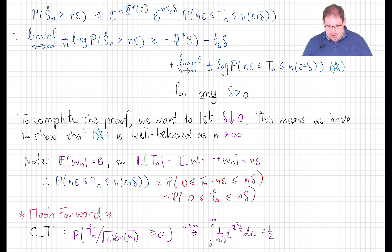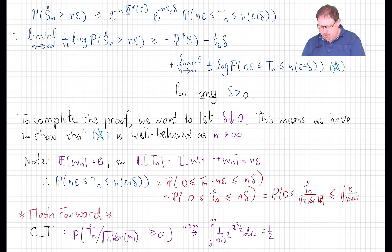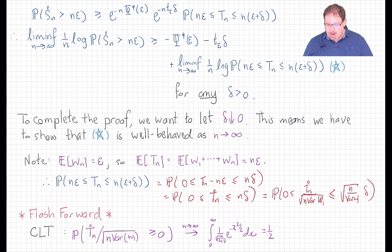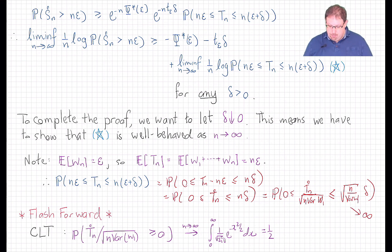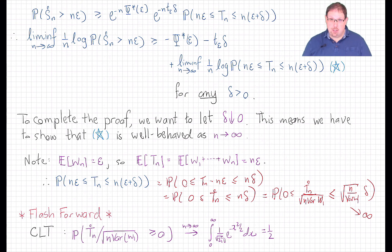The probability we must handle can be rewritten by dividing through by this standard deviation as the probability that 0 is less than or equal to the standardized T_n, and that is less than or equal to the square root of n over the common variance of the w's times delta. Since the w's are not constant, the variance is nonzero. For any positive delta, the upper limit goes off to infinity, so by a continuity argument for probability measures this converges to the probability that a standard normal is between 0 and infinity, which is 1/2. That shows the log here converges to log(1/2), not negative infinity, and therefore dividing by n, the limit is 0. We have concluded the proof of Cramér's large deviation principle.